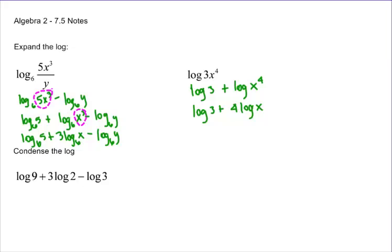Condensing a log, when you condense a log, you just go in reverse order. If I've got this three right here, he needs to come up into the exponent. That's going to be log nine plus log two to the third power minus log three.